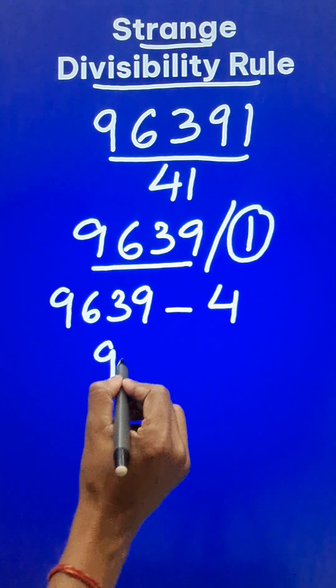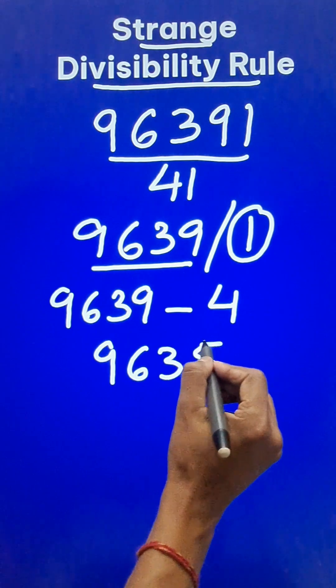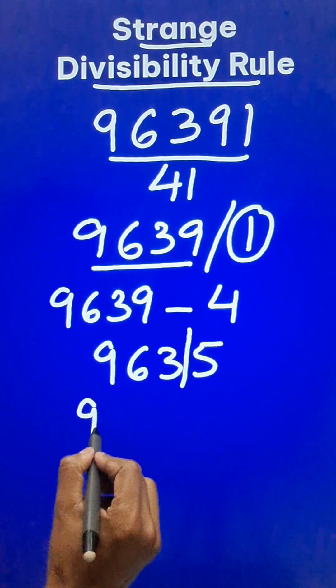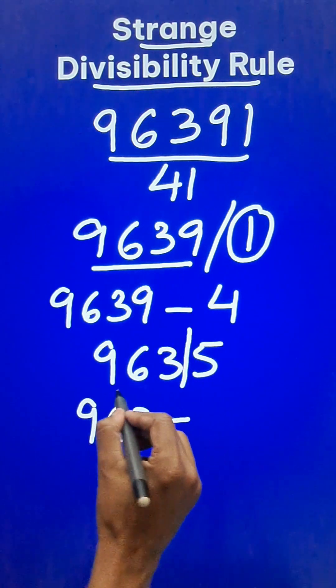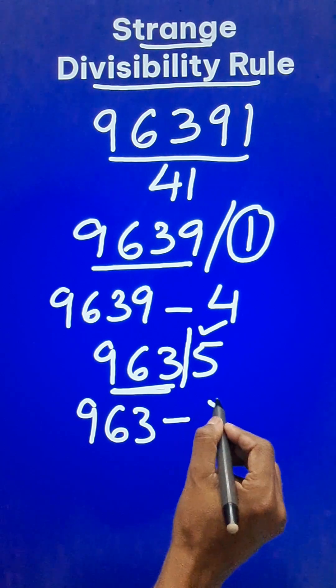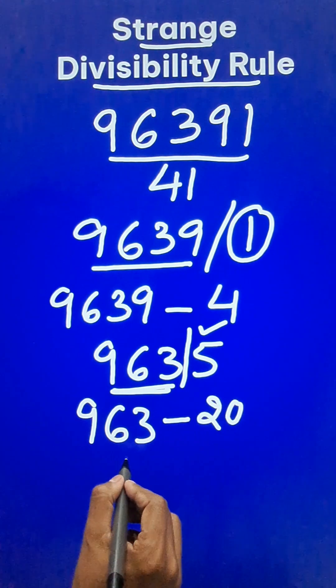Now what do you get here? 9, 6, 3, 5. Now again separate out the last digit. 9, 6, 3 minus 4 times 5 is 20 and so you get 943.